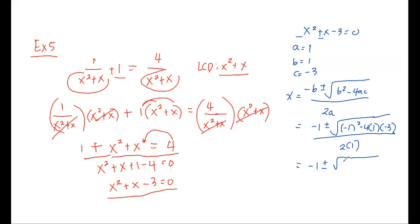So we have negative 1 plus and minus, negative 1 squared is 1. Negative 4 times 1 is negative 4 times negative 3, it's positive 12. Over 2 times 1 is 2.